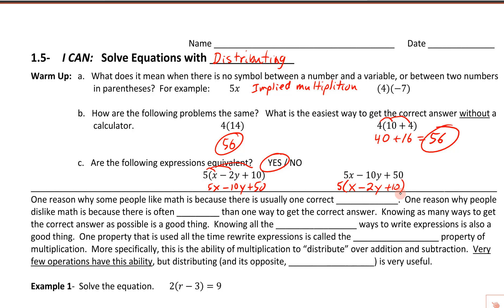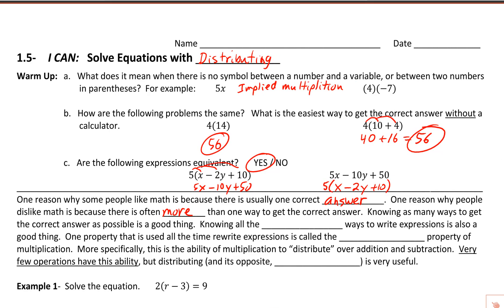One reason people like math is there's usually one correct answer — it's comforting to know that if you do it right, you're looking for one single answer. But one reason people dislike math is there's often more than one way to get that correct answer, which can be frustrating. Knowing as many ways as you can to get the correct answer is actually a good thing. If you've got a lot of different tools in your toolbox, a lot of different methods to solve things, that's great.